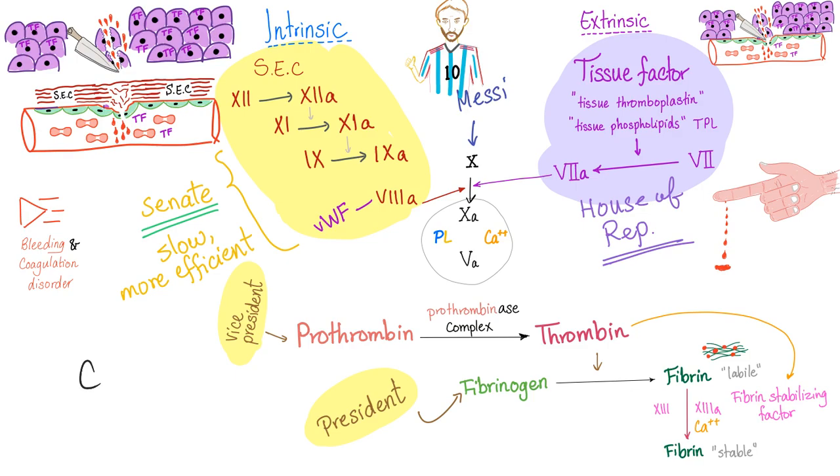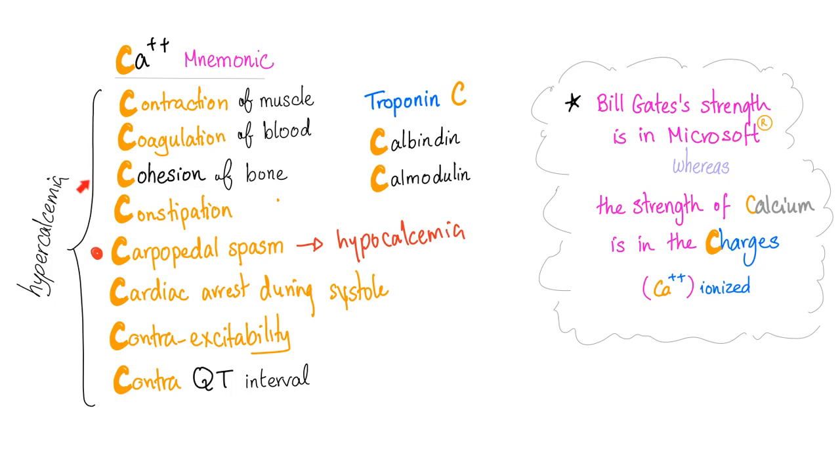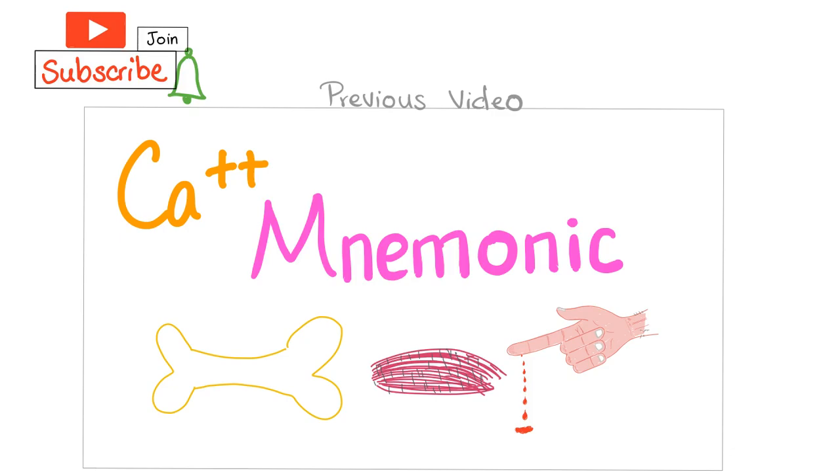Calcium is the hero of blood coagulation. Again, it's the charged ionized calcium. Some textbooks will consider calcium to be coagulation factor number four. So here is a calcium mnemonic. Functions of calcium: contraction of muscle, coagulation of blood, cohesion of bone. Calcium imbalance will lead to constipation, carpopedal spasm, cardiac arrest during systole, contra-excitability, and contra-QT interval. What do you mean by contra-excitability? If you have high calcium, your nerve excitability will decrease. But if you have low calcium, your nerve excitability will increase. What do you mean by contra-QT interval? If you have high calcium, this will shorten your QT interval on ECG. But if you have low calcium, this will increase the duration of the QT interval on ECG because calcium equals contraction. More about this on my previous video titled calcium mnemonic.